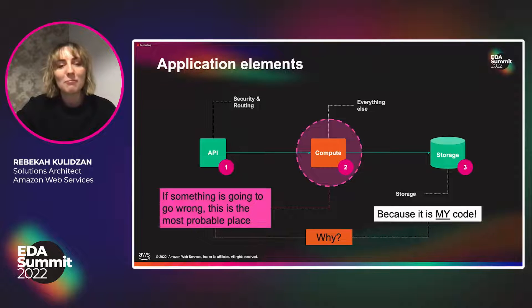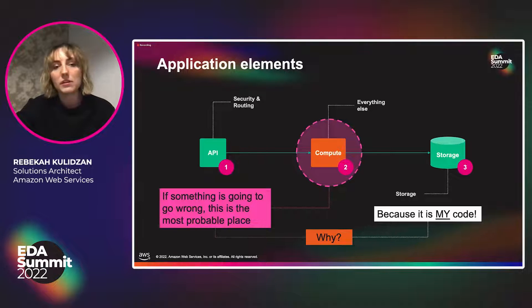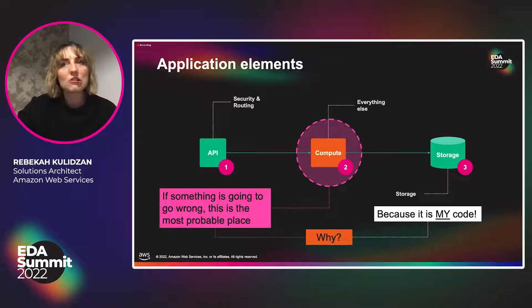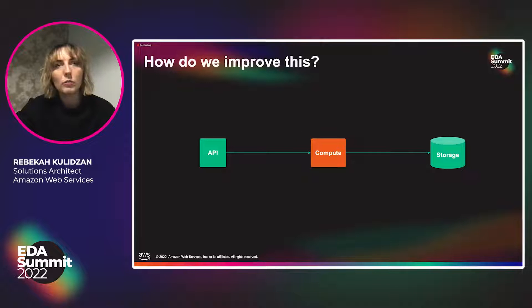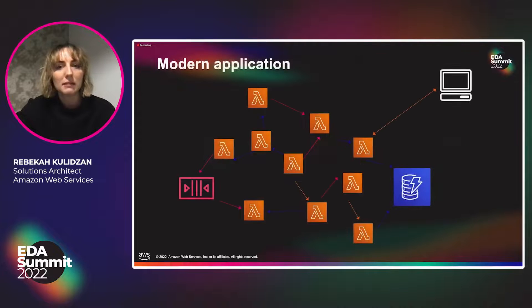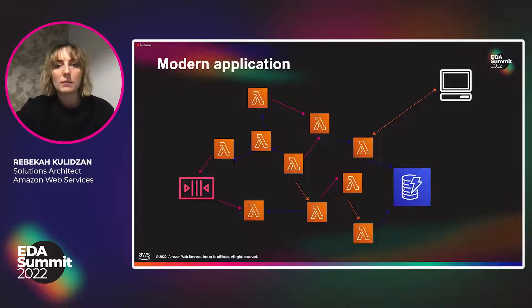Why? Well, because it's my code. Many of us are developers who have built things, and we all know things go wrong. But it's not all down to human error. Writing less code means there's less to maintain, which means it's easier to run and makes more reliable and frankly more secure apps. So how can we improve on this? Working in the serverless space, maybe throwing it all into Lambda.